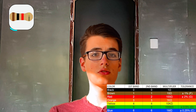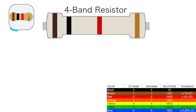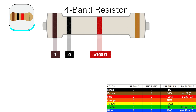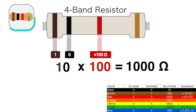On a resistor with four bands, the first two bands represent the significant numbers. So here we have a brown one and then a black zero. The third band represents the multiplier — in this case, 10 to the second, or 100. So 10 times 100 equals 1000 ohms.